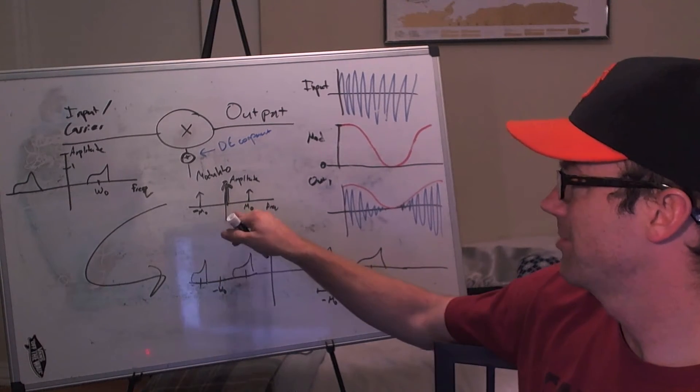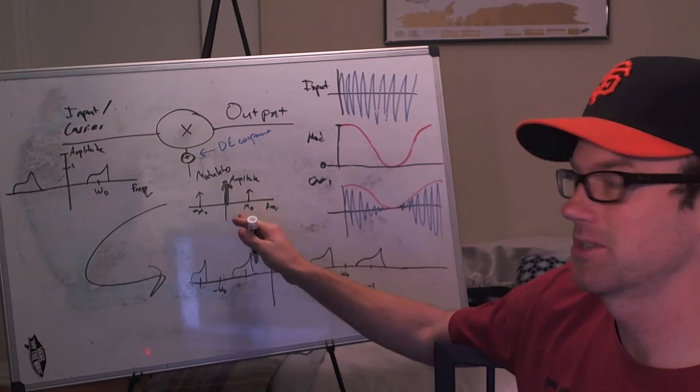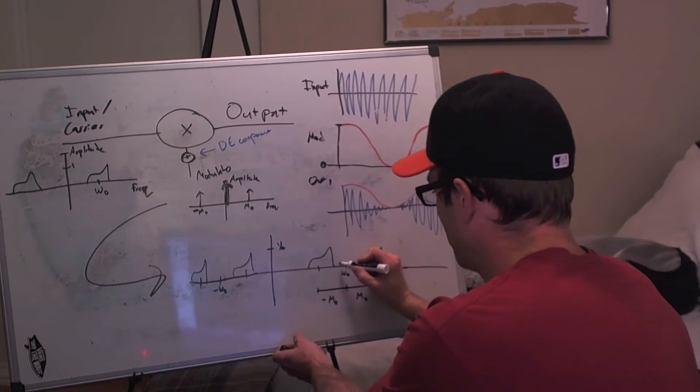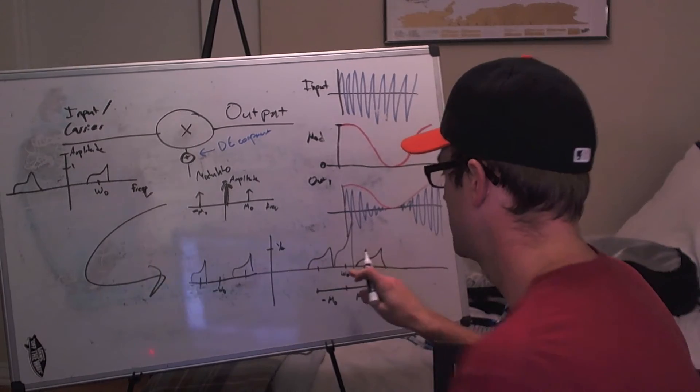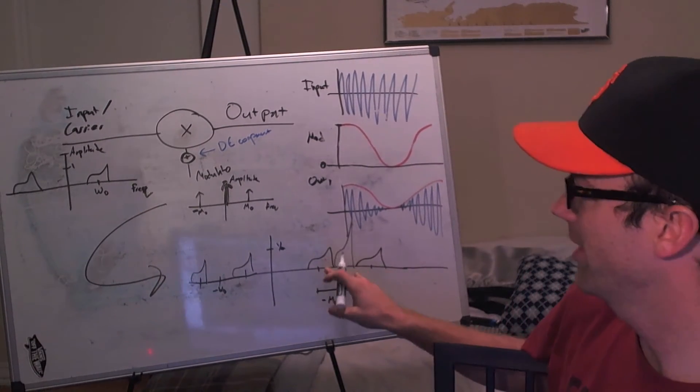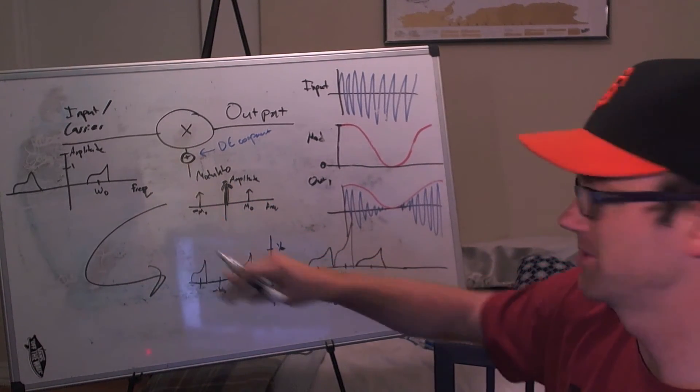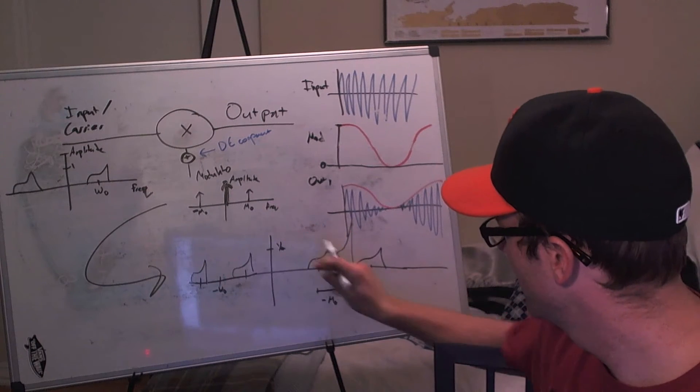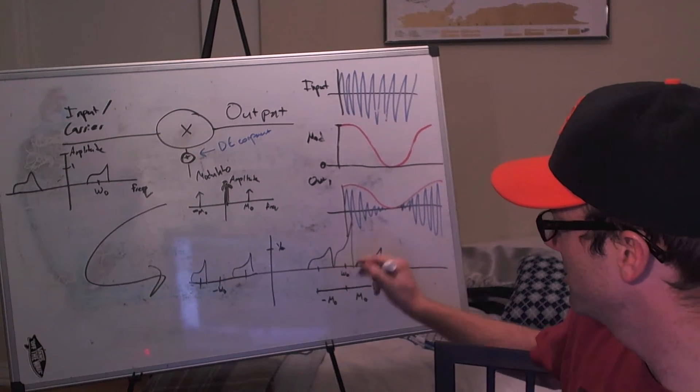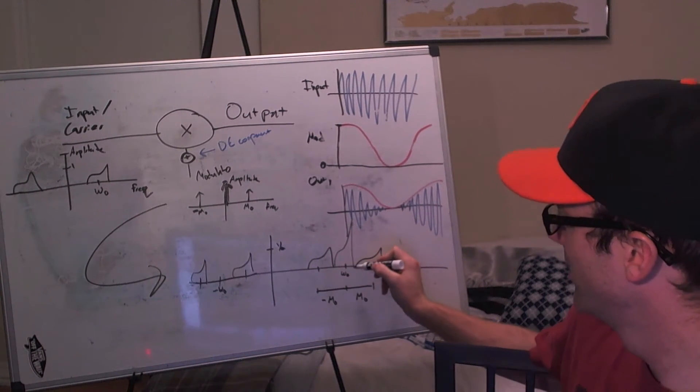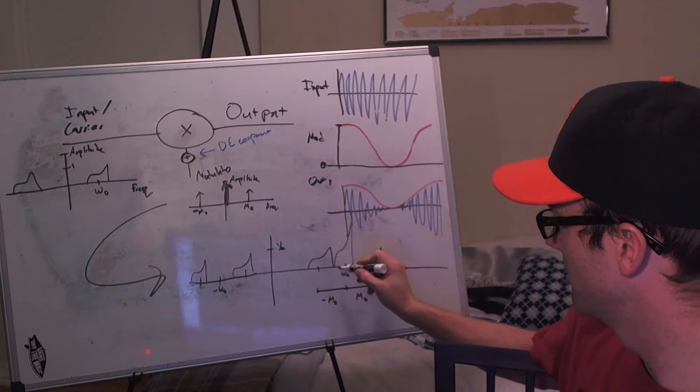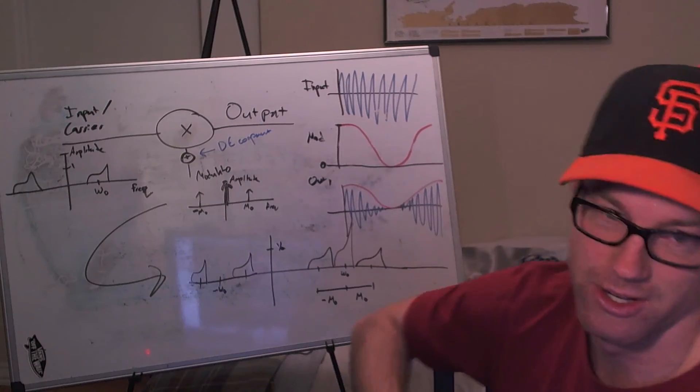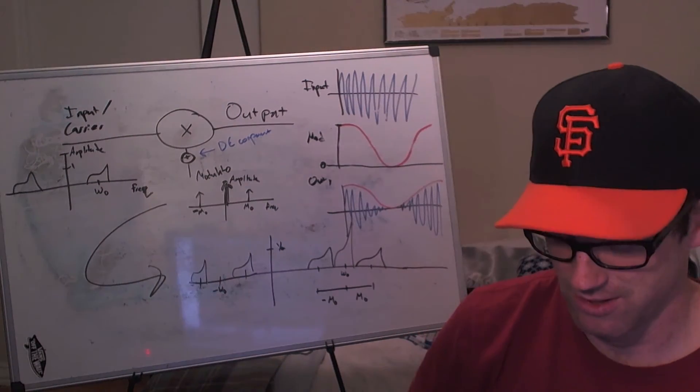But we also get another one that is still centered at w0 and is the same amplitude as the original signal. Remember these sidebands are at half the amplitude, but with amplitude modulation the original signal remains at w0. And that has some interesting implications.